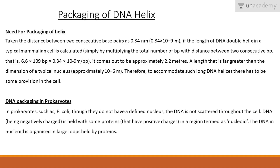Coming to packaging of DNA helix — why do we need to package it? Taking the distance between two consecutive base pairs as 0.34 nm, if we calculate the total length of DNA in a typical mammalian cell by multiplying 6.6 × 10⁹ base pairs by 0.34 × 10⁻⁹ m, it comes out to approximately 2.2 meters. This is far greater than the dimension of a typical nucleus, which is only about 10⁻⁶ meters. Hence there must be some provision in the cell to accommodate such long DNA helices.